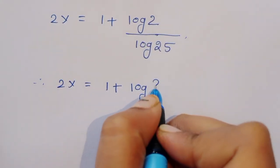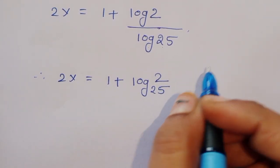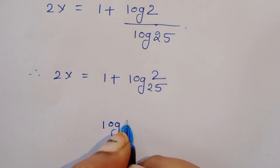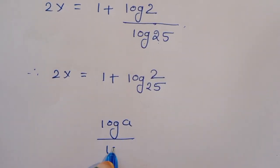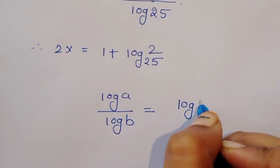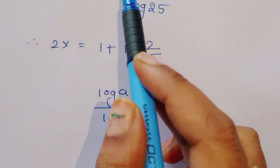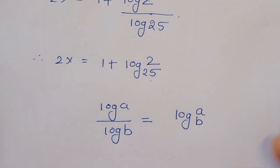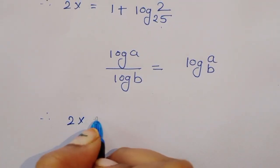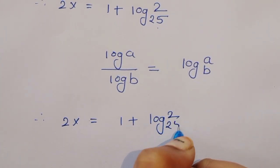We know the formula: log of a divided by log of b is equal to log of a to the base b. So we can write log of 2 divided by log of 25 as log of 2 to the base 25. Therefore 2x is equal to 1 plus log of 2 to the base 25.